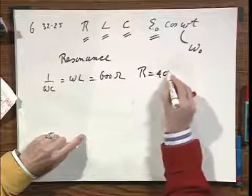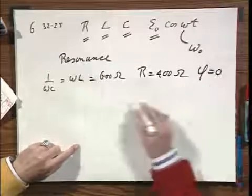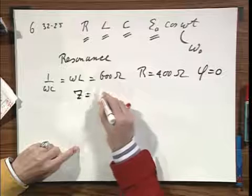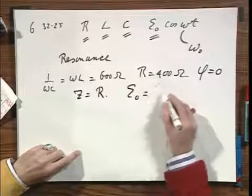R equals 400 ohms. Phi equals zero. And Z equals R. That's very characteristic for resonance.